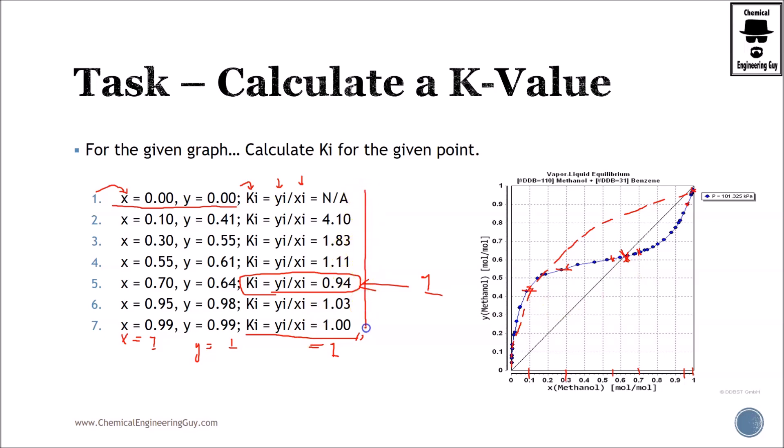Anyways, what I did here was to perform the calculations. And as you can see, the K value for methanol is much larger at lower values rather than those at higher values because of this crossing of the line.